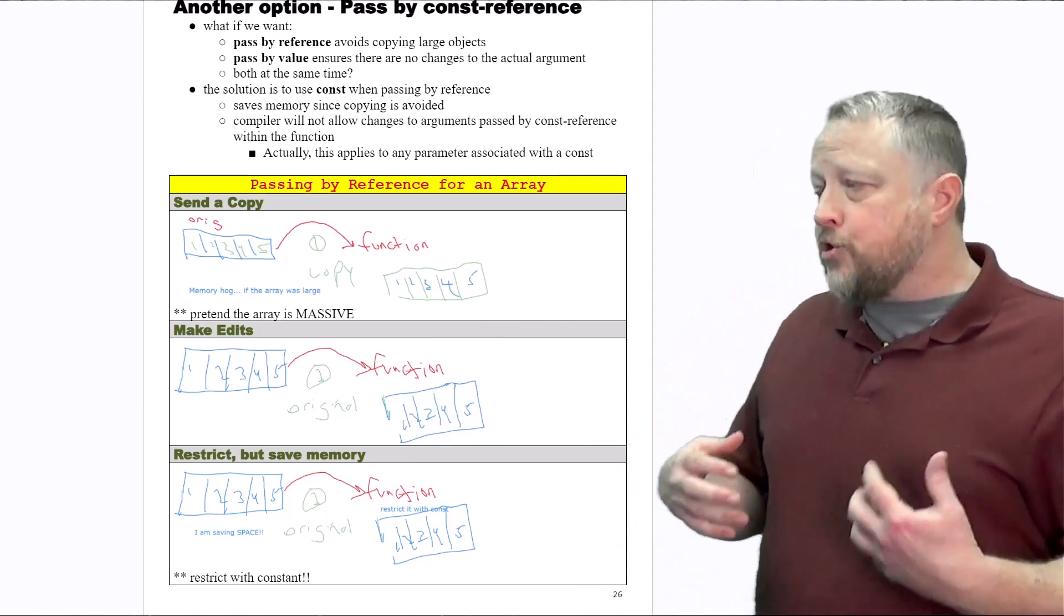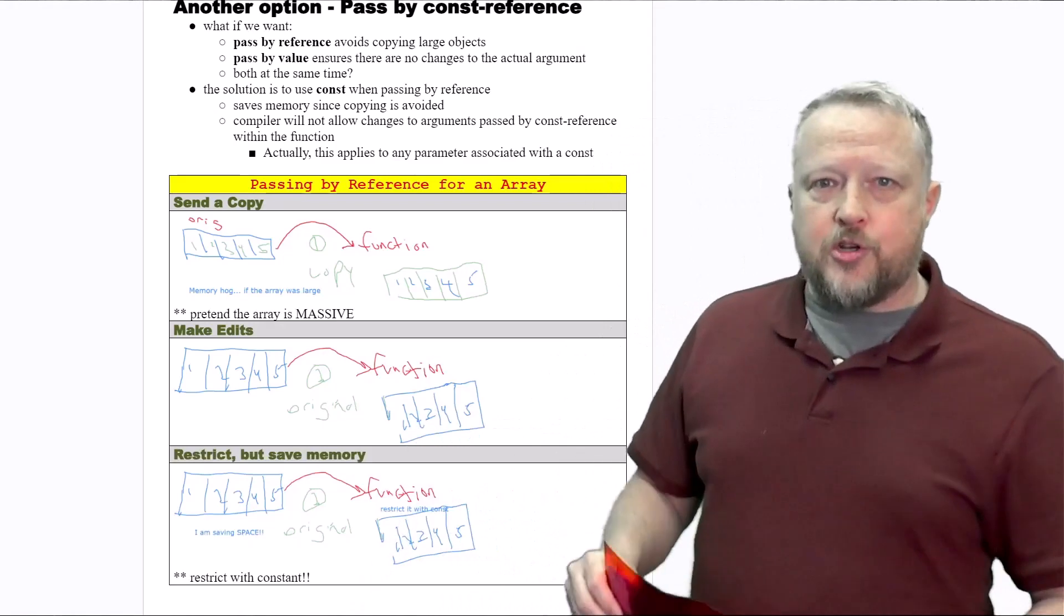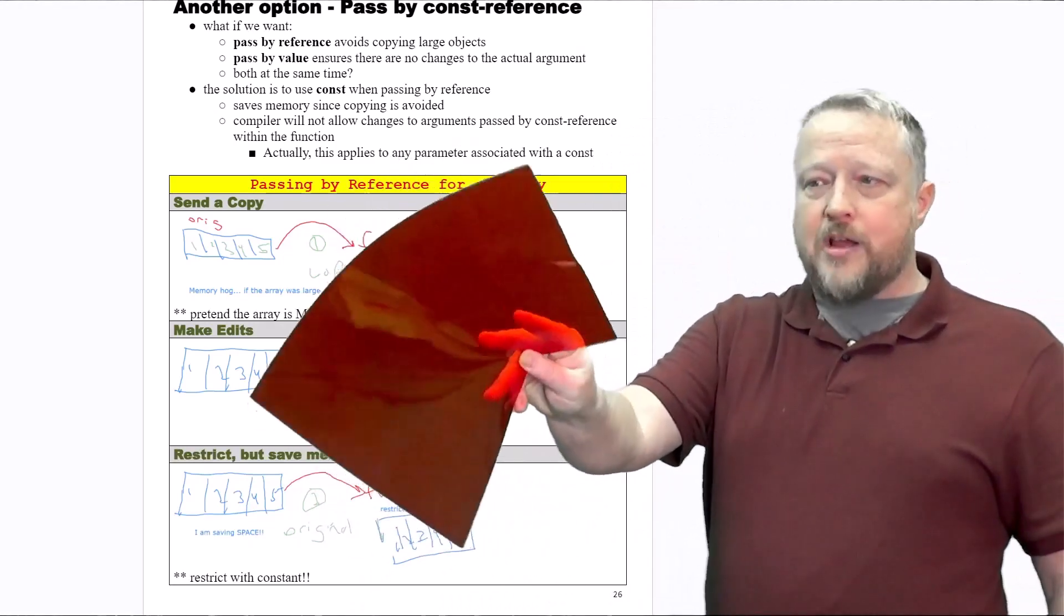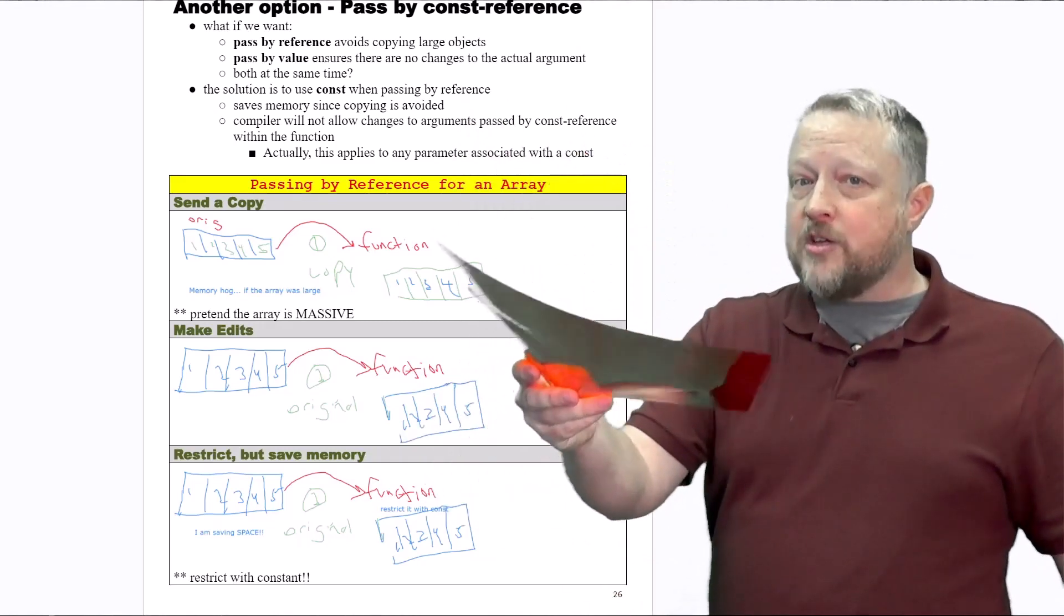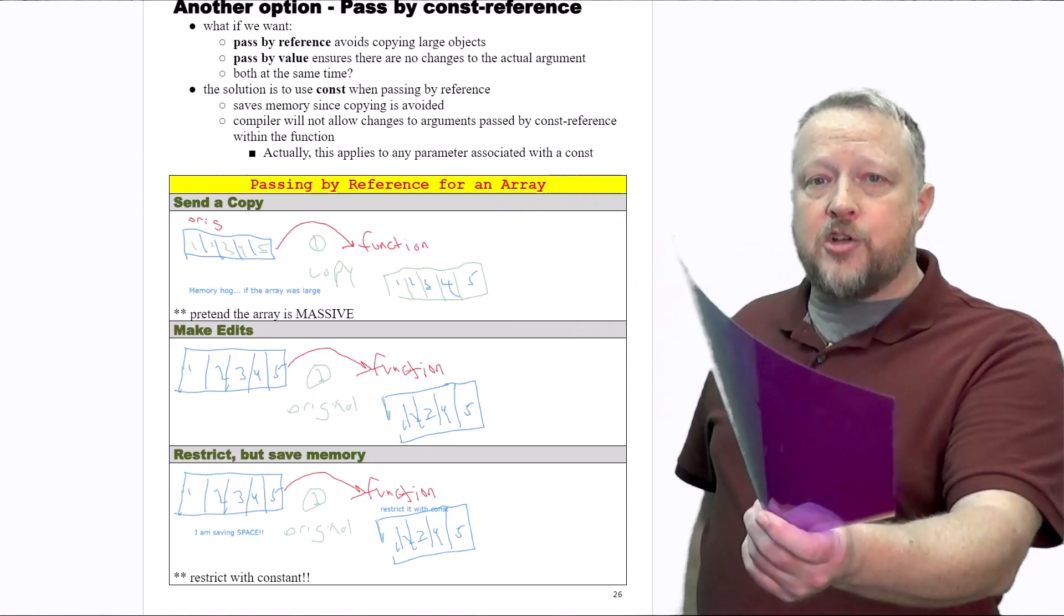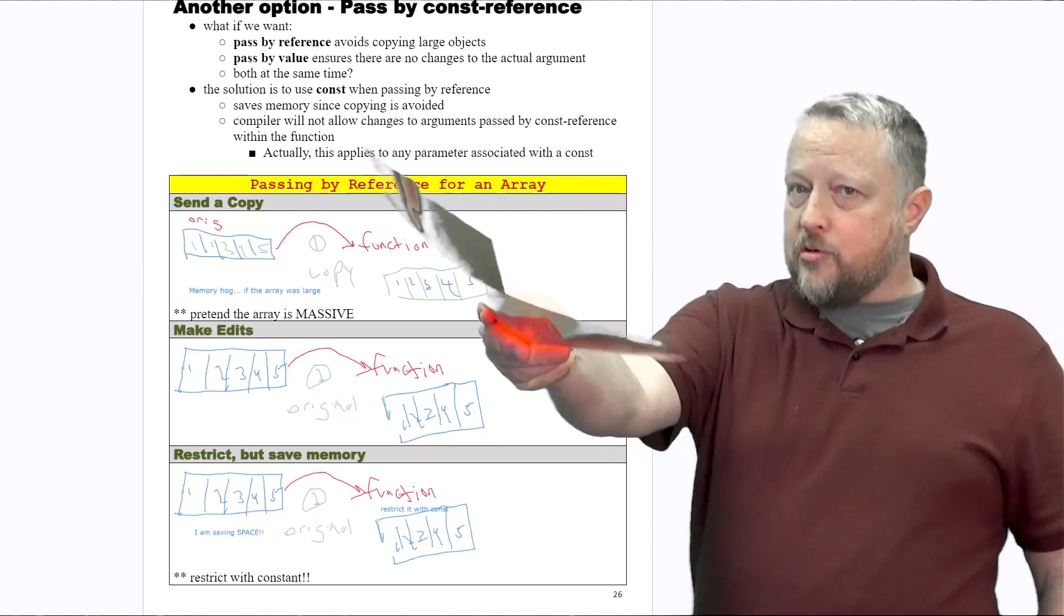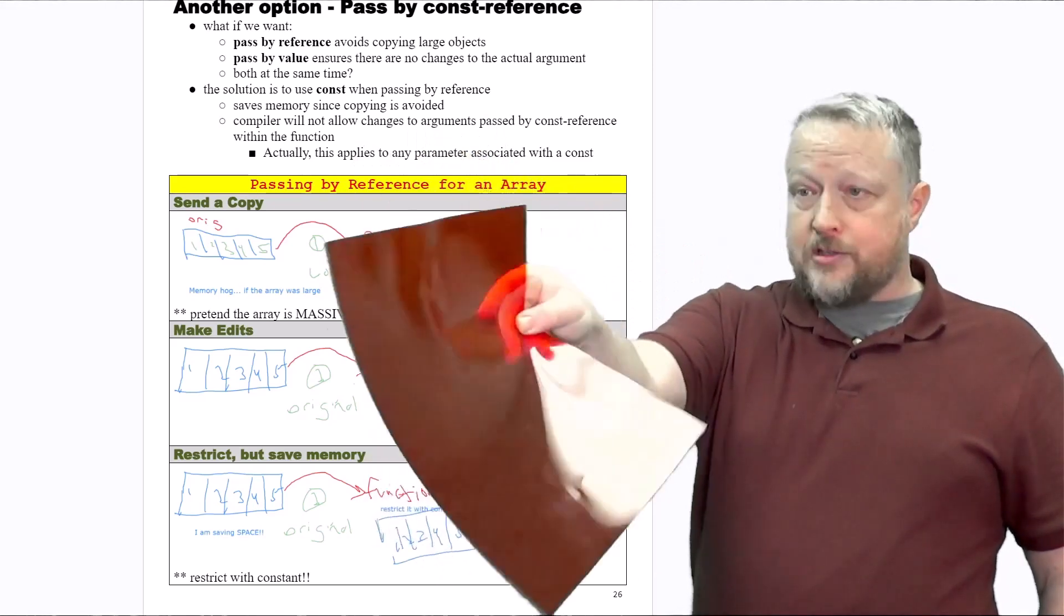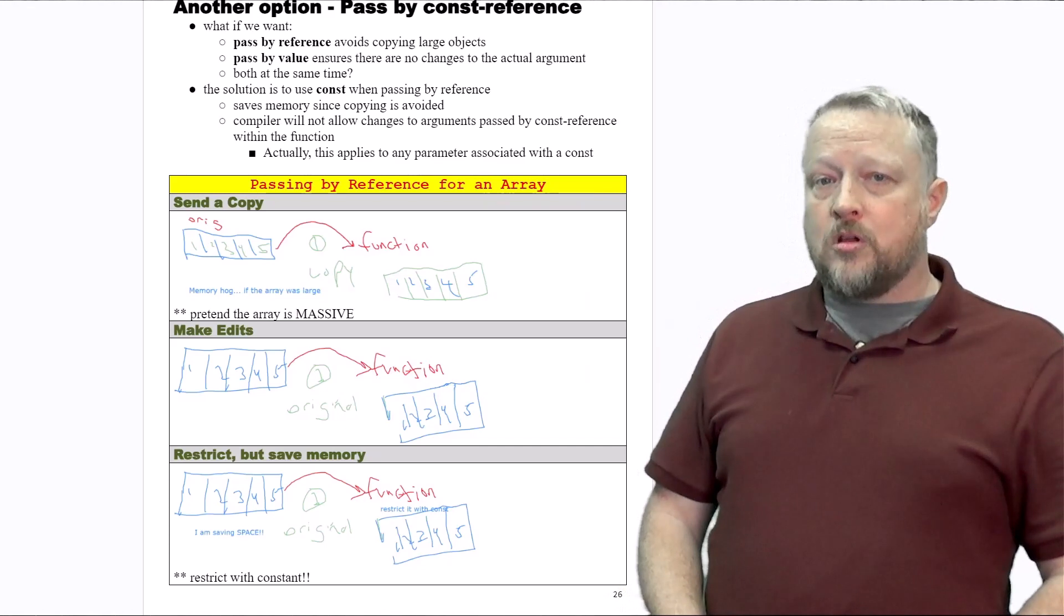That's fine, because you're also saving space. The red was the original. I am giving you the grade book, but guess what? You have nothing to write with, but here I'm saving space. I don't have to give you a copy and worry about you making changes, because you can't. So I'm easily giving you the original, restricting it with the const, and have at it. Good luck changing it, because the compiler won't let you.